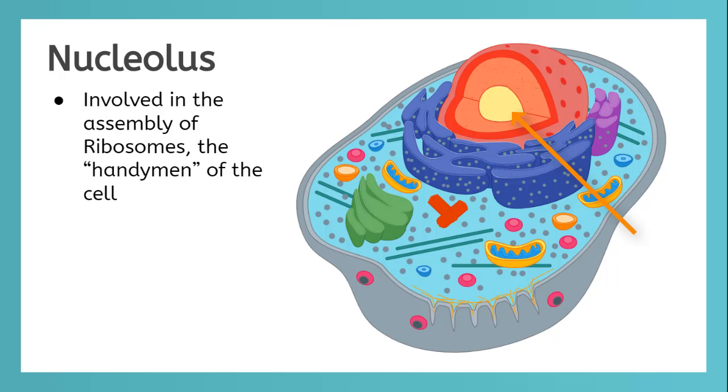The egg yolk in the middle of the nucleus is called the nucleolus. The nucleolus has a main job of building ribosomes for the cell. After the ribosomes are built, they are transported out into the cytoplasm to work as the handyman for the cell.